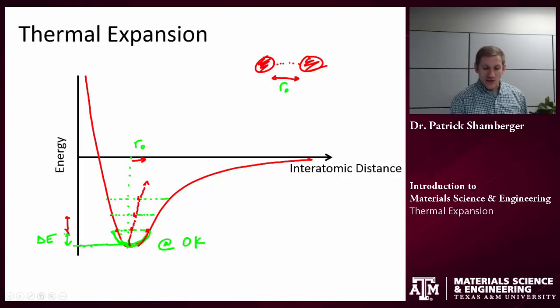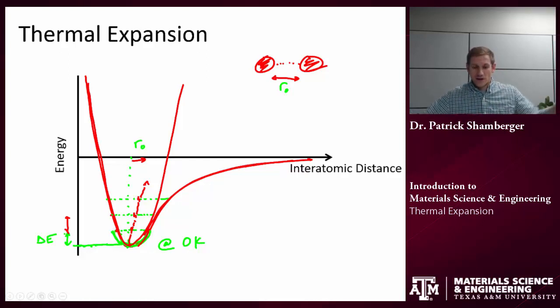As I heat it up, this curve is always asymmetric. If I had a perfectly symmetric bonding curve, then I wouldn't expect materials to heat up. But by virtue of the fact that there's a finite distance that they can come together and they can go infinitely far apart, it is an asymmetric curve.